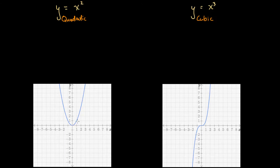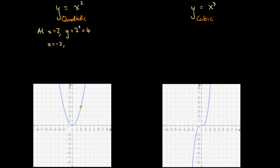Let's consider what happens at x equals two and x equals minus two for each graph. For the quadratic, at x equals two, y equals two squared, which equals four — that's two units right of the origin and four units up. At x equals minus two, y equals negative two squared, and a negative times a negative is a positive, so that also equals four — two units left of the origin and four units up.